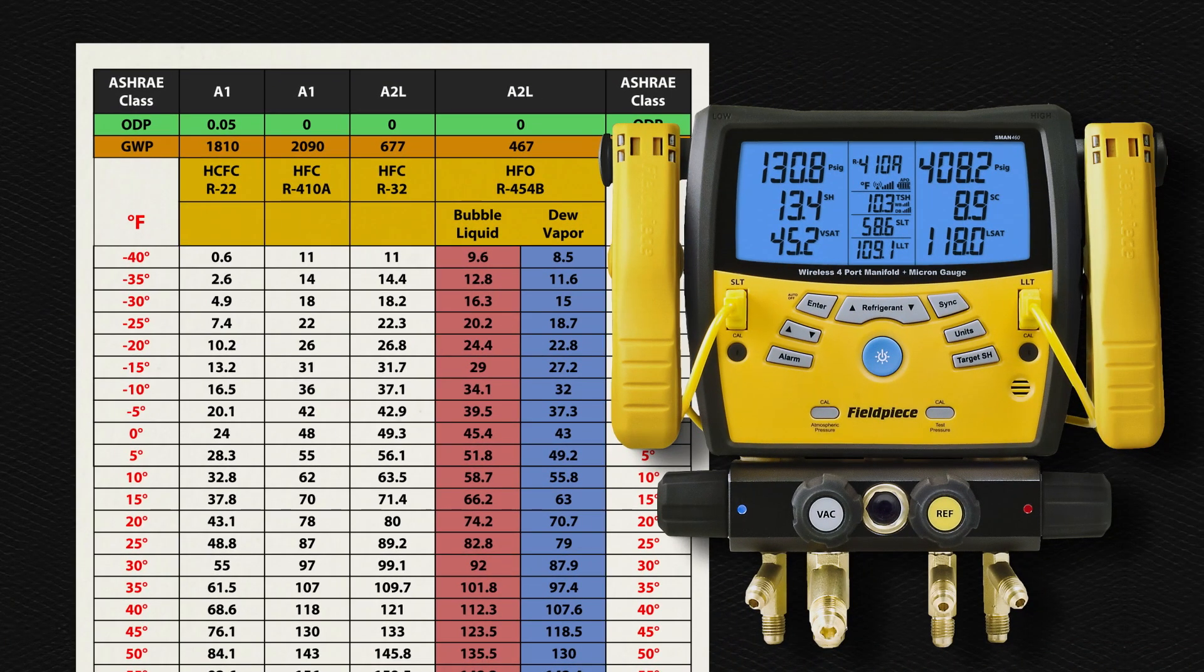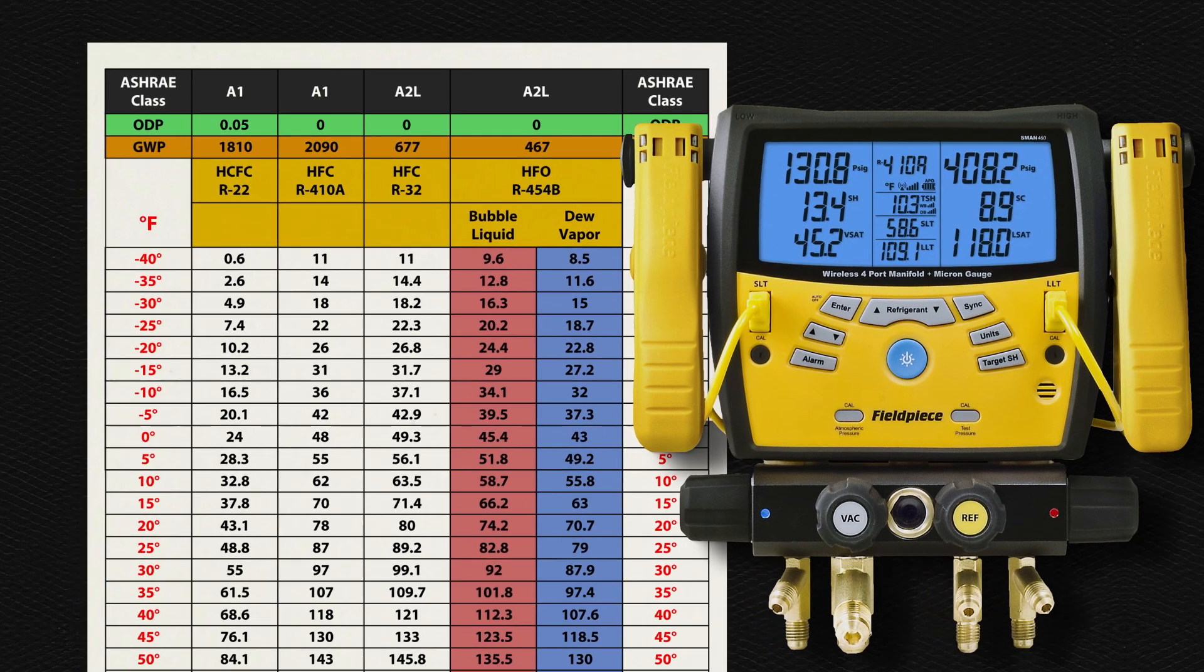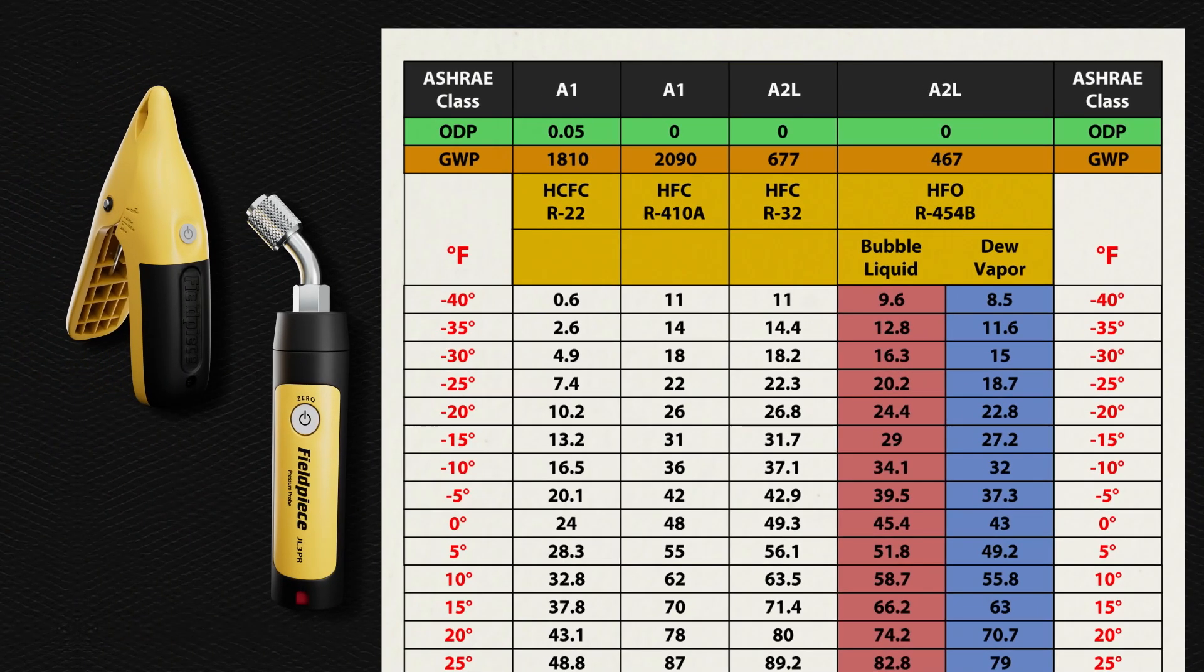Digital gauges have numeric values representing the PT chart with multiple refrigerant sections. Bluetooth gauges have multiple refrigerants plus provide data to be logged and saved. The PT chart is integrated through the app. Also, these gauges prevent cross-contamination since there are not any hoses.